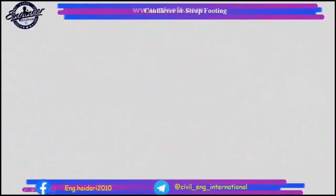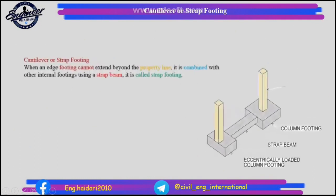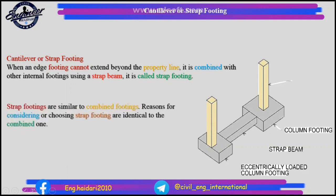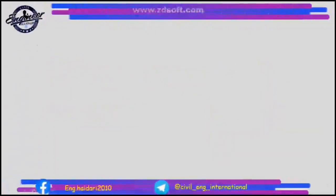Strap footing: when an edge footing cannot extend beyond the property line, it is combined with other internal footings using a strap beam — this is called strap footing. Strap footings are similar to combined footings, and the reasons for choosing strap footing are identical to those of the combined footing.